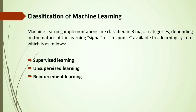Machine learning can be classified into three major categories depending on the nature of their learning: supervised learning, unsupervised learning, and reinforcement learning, which you will learn more about further in this video.